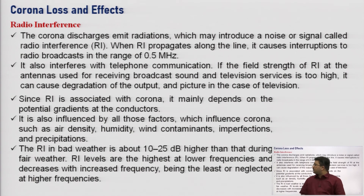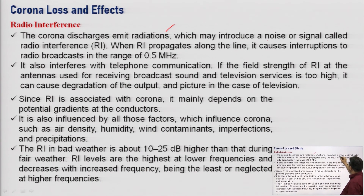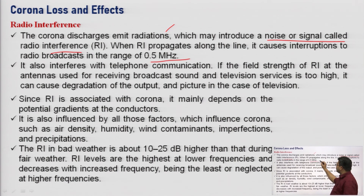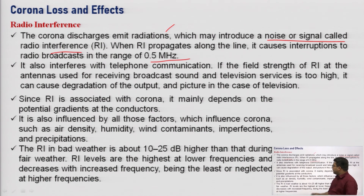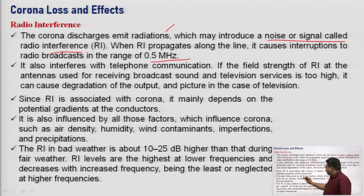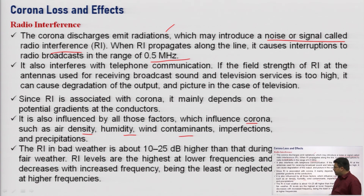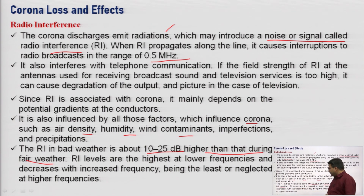Another impact is radio interference: corona discharge emits radiation which introduces noise in signals — this is called radio interference, up to a range of 0.5 MHz. It interferes with telephone communication and radio signals. Factors such as air density, humidity, and wind affect this interference. During bad weather, radio interference can be 20 to 25 dB higher than during fair weather.